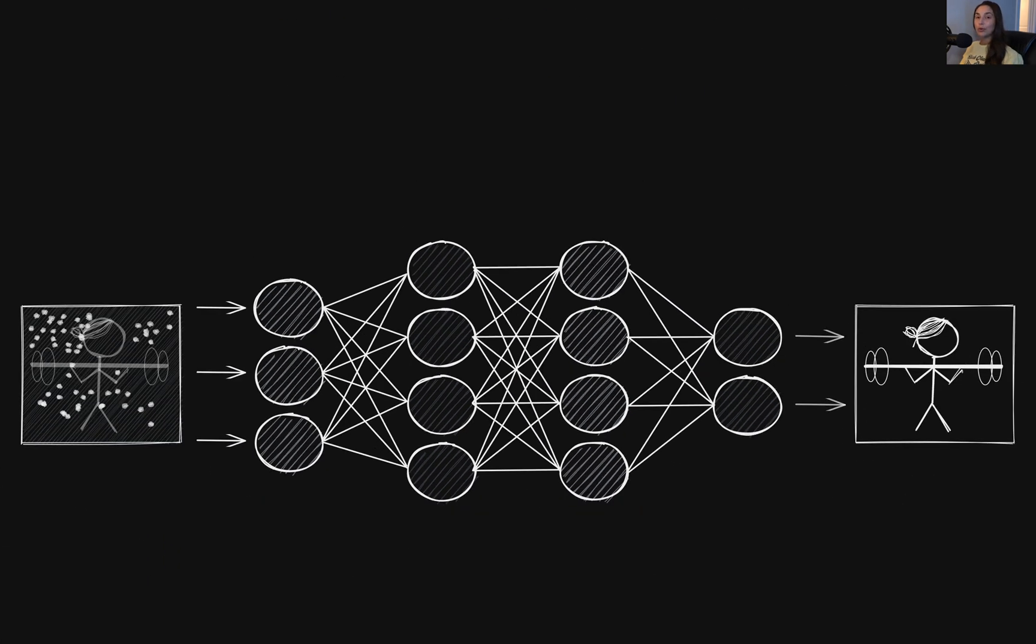In general, diffusion models are trained to denoise data in a sequential, step-by-step fashion. As we'll later become familiar with, this denoising process is how a diffusion model can actually generate images.